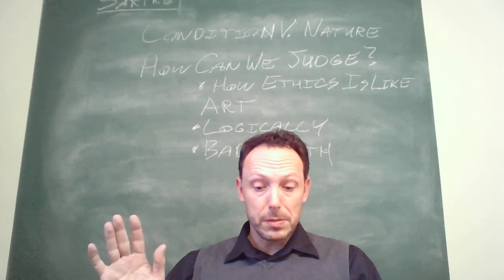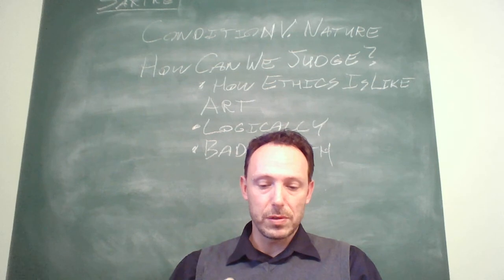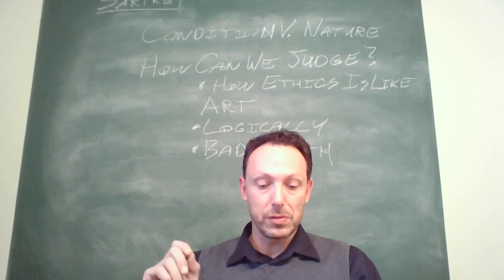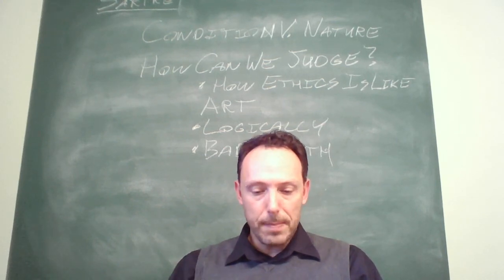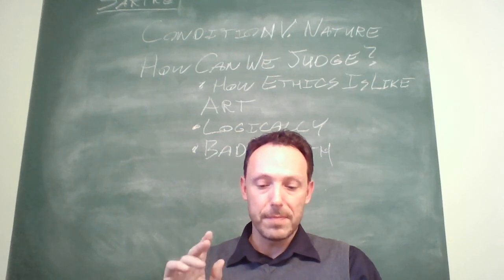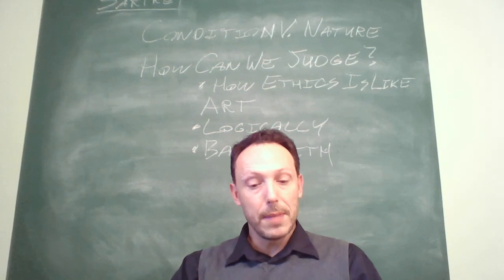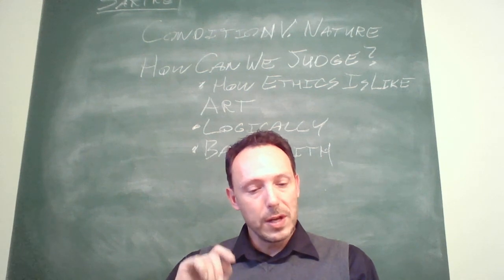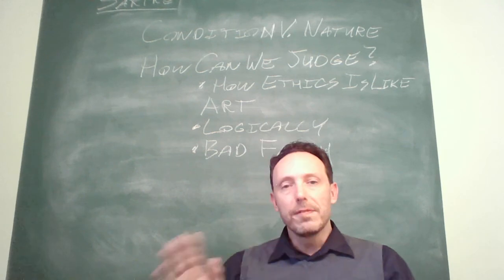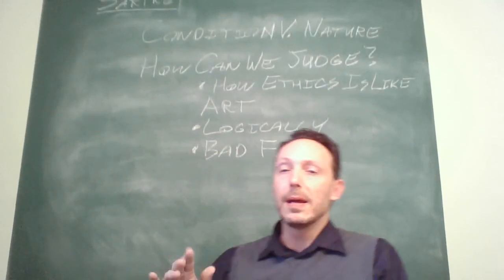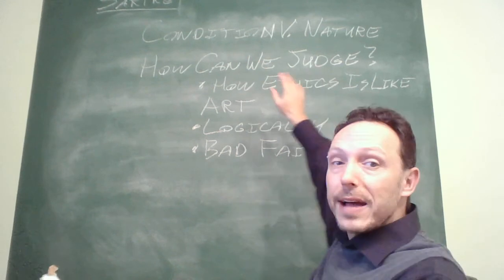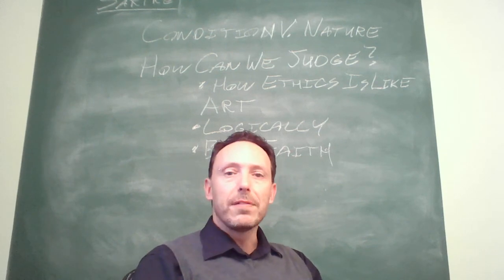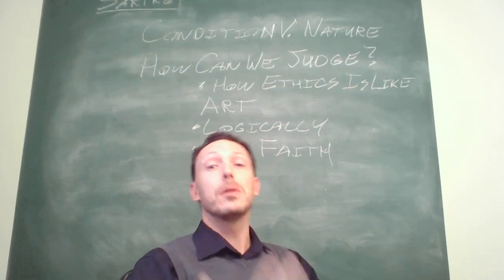Besides, it's impossible to find in every man some universal essence which would be human nature, yet there does exist a universal human condition. It's not by chance that today's thinkers speak more readily of man's condition than of his nature. By condition they mean the a priori limits which outline man's fundamental situation in the universe. So effectively what existentialism does by suggesting that we have a condition rather than a nature is to maintain a sphere of freedom. If we have a nature, then we can never be anything but what we are.